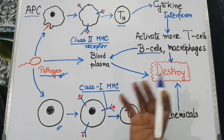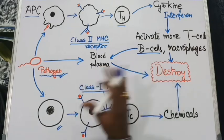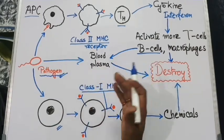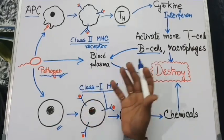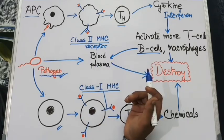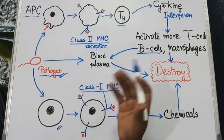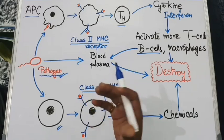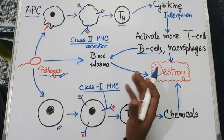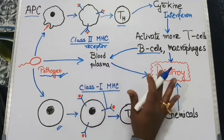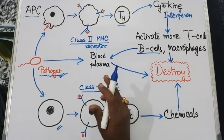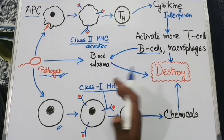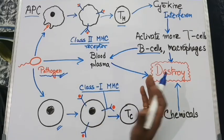Thus different components of innate and adaptive immune systems act coordinately with each other. Importantly, our immune cells can create memory from the first exposure to any disease, which helps the body fight more rapidly on the next exposure to the same pathogen.